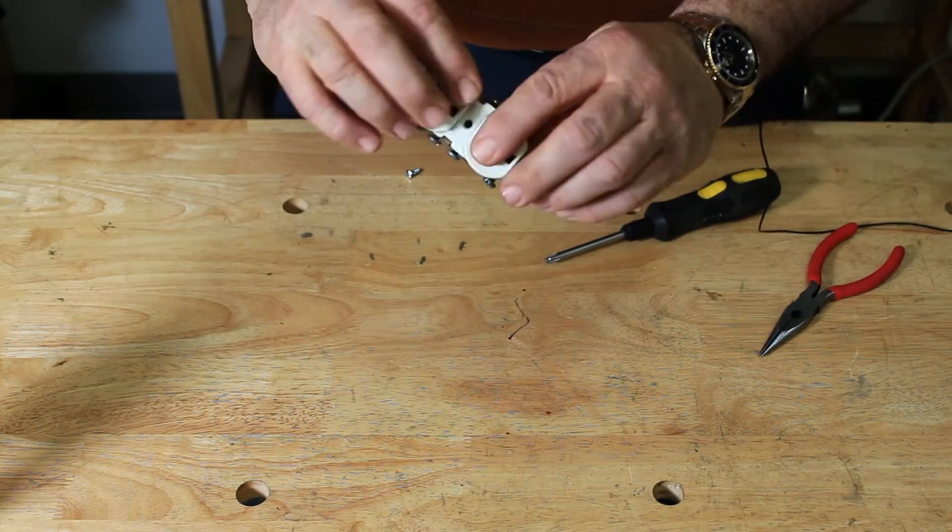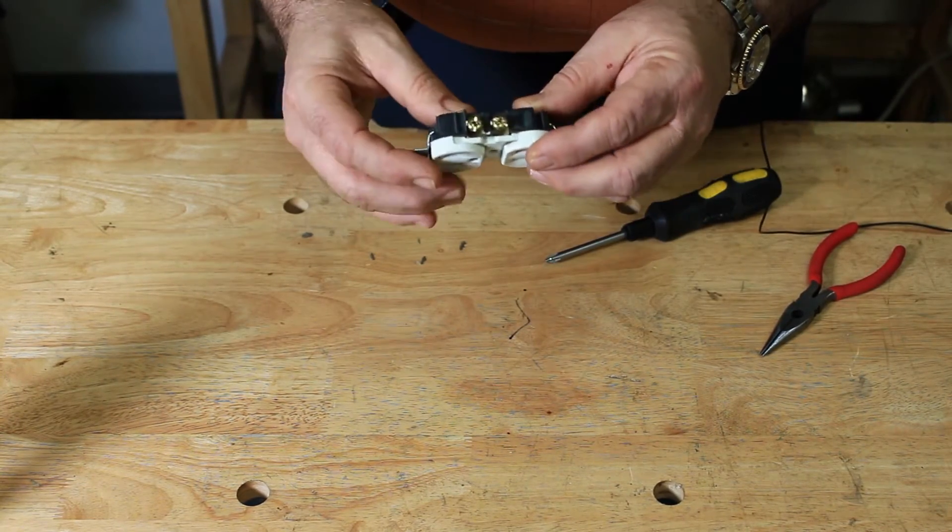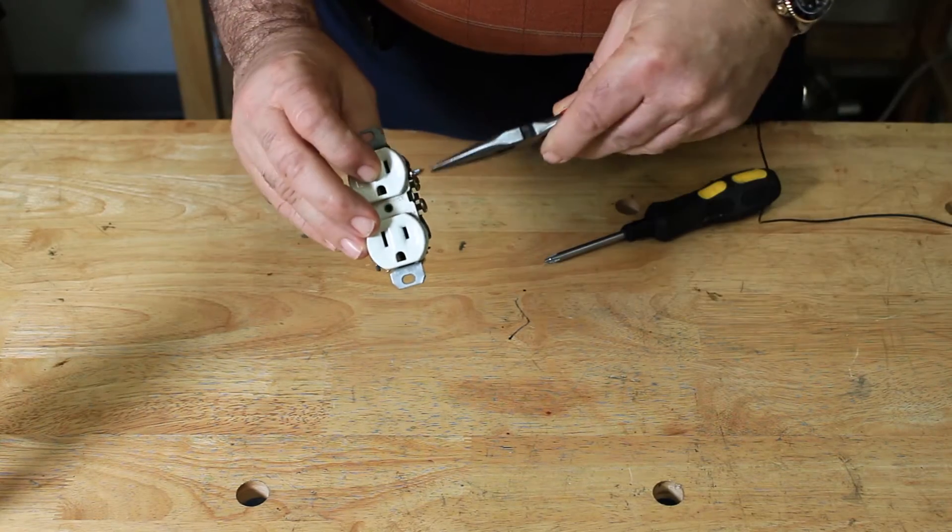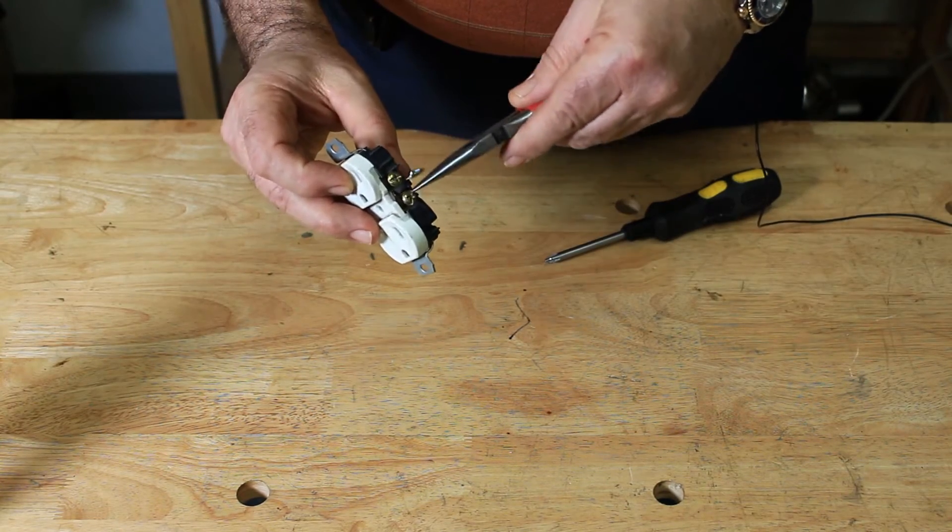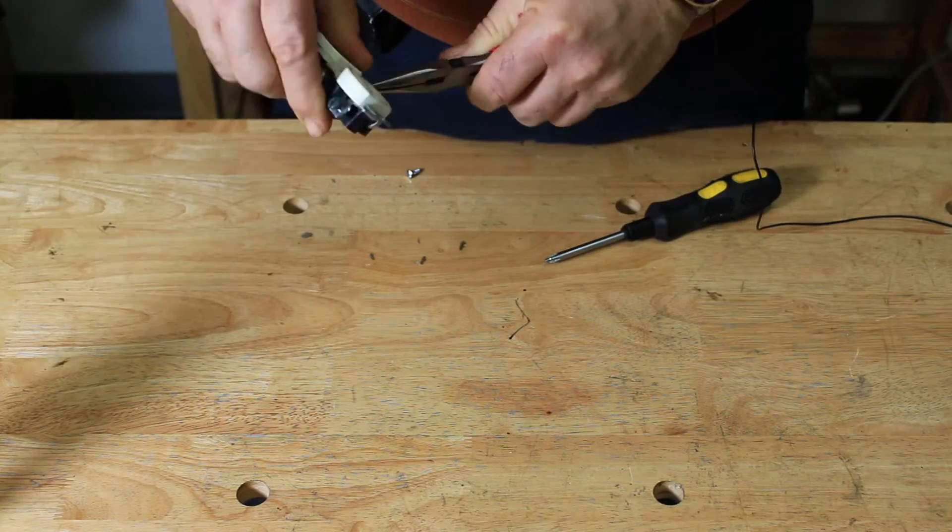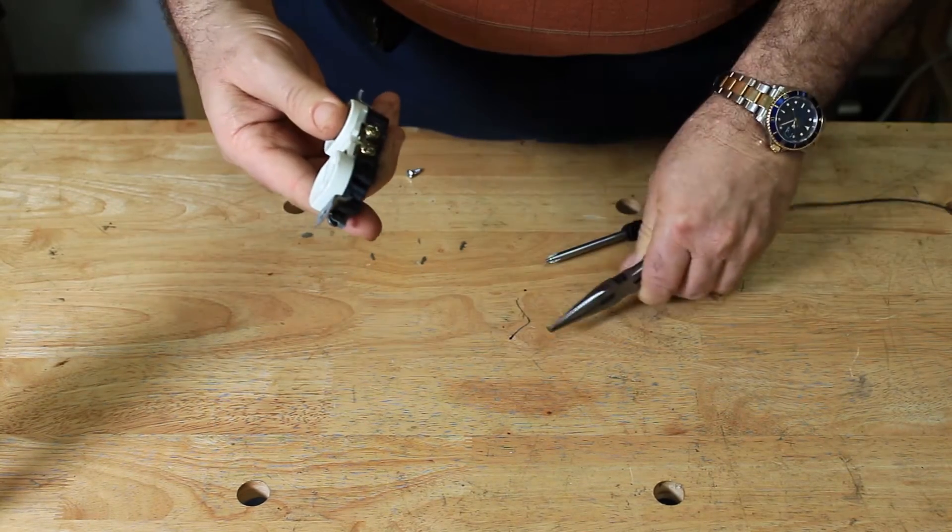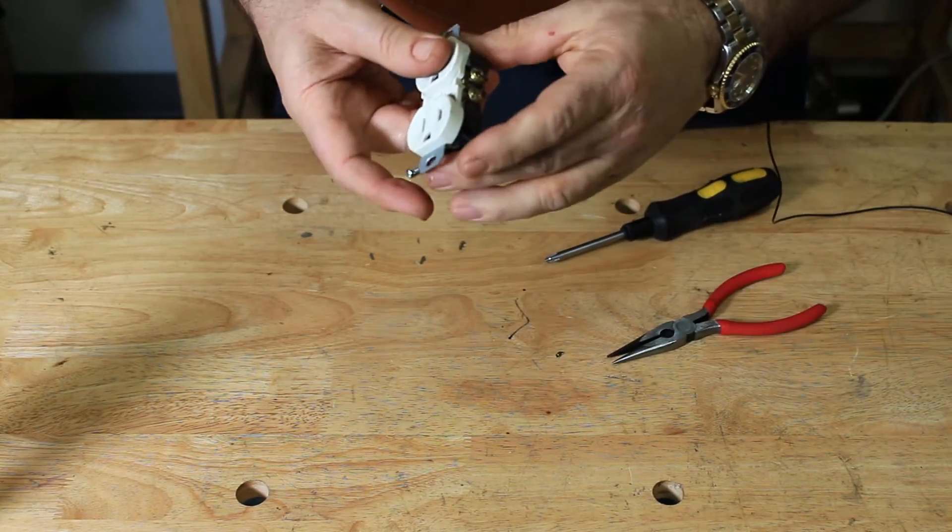So basically this is a standard duplex receptacle. If you notice right in here, these two are connected. So you take a pair of pliers and wiggle that back and forth and it will break off. They're no longer connected.